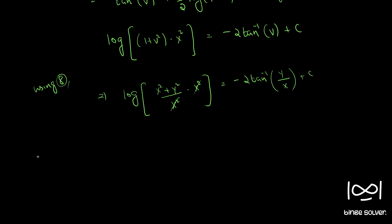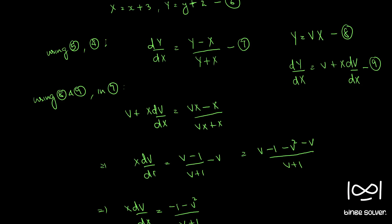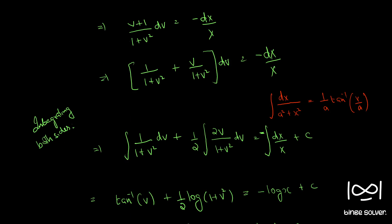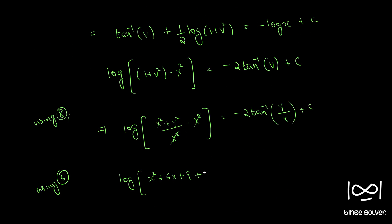Now we apply the back-substitution from equation 6: capital X equals x plus 3 and capital Y equals y plus 2. Substituting, log of (x plus 3) squared plus (y plus 2) squared — expanding: x squared plus 6x plus 9, plus y squared plus 4y plus 4 — equals minus 2 tan inverse (y plus 2) by (x plus 3) plus c.